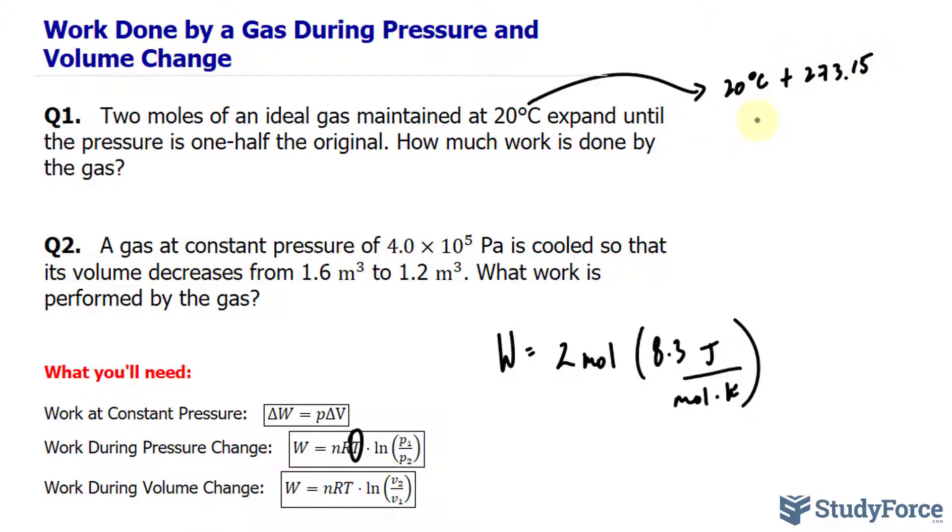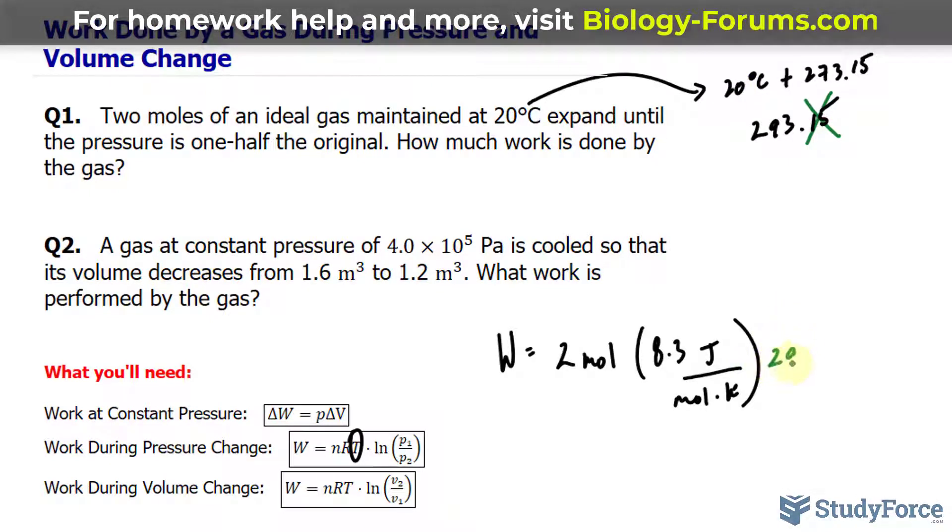That becomes 293.15, but we'll ignore the decimal 15 to take into account significant figures when adding. 293 Kelvin, that gets cancelled out with that.